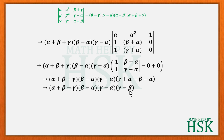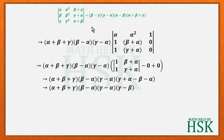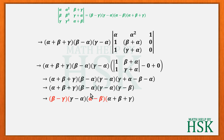We now have (α+β+γ)(β−α)(γ−α)(γ−β). We need to match the required form (β−γ)(γ−α)(α−β)(α+β+γ). Taking minus common from (β−α) gives (α−β), and taking minus common from (γ−β) gives (β−γ). The two minus signs give a positive product, so the expression equals (β−γ)(γ−α)(α−β)(α+β+γ), which is the required result.